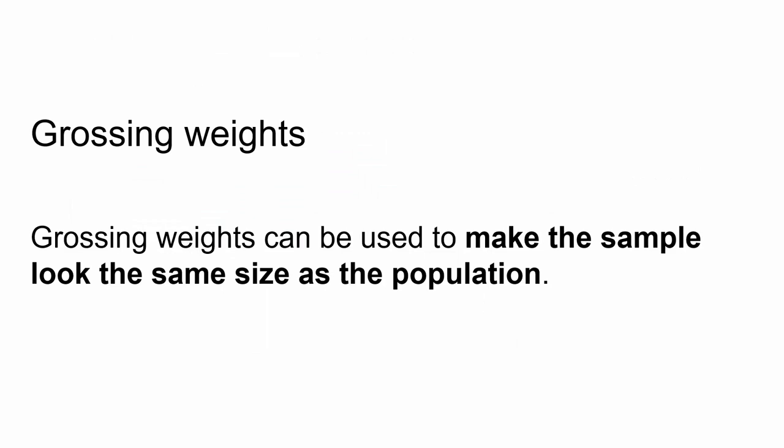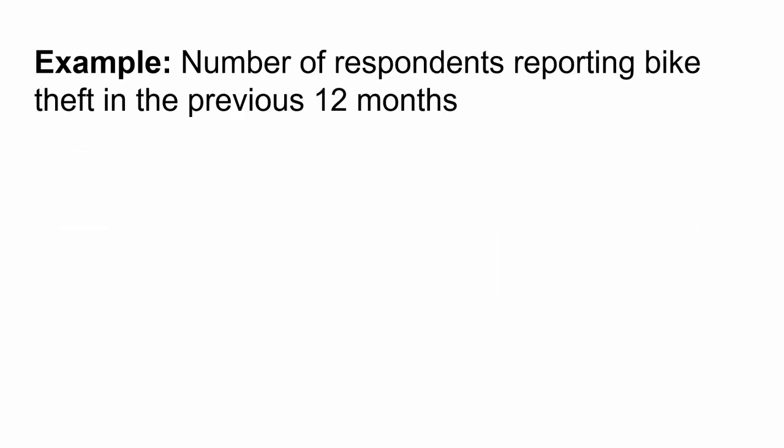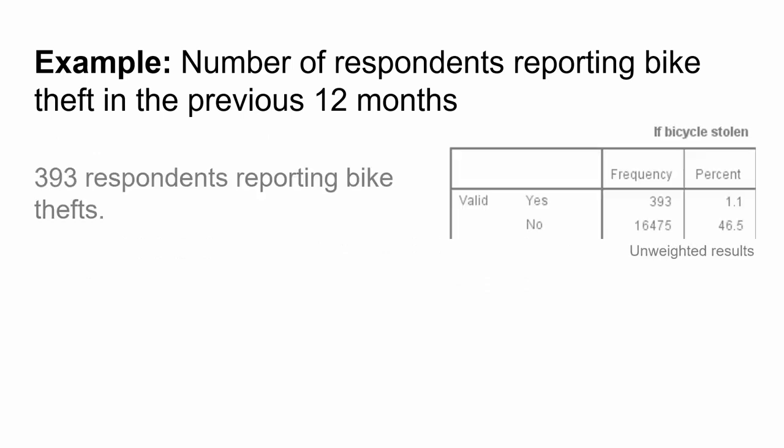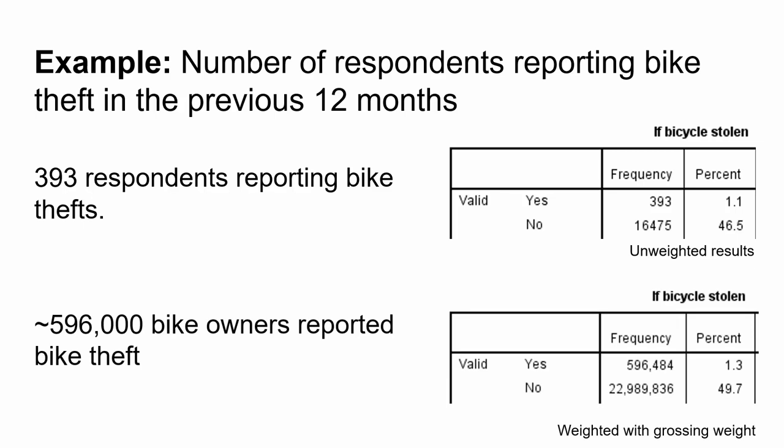Weights can also be used to make the sample look the same size as the population. Known as grossing weights, they can help us describe the prevalence of social phenomena. For example, with the Crime Survey for England and Wales, they help us describe rates of crime. This example, from the 2016-2017 data, shows the number of respondents reporting bike theft in the previous 12 months. The unweighted sample gives a frequency of 393, and after weighting, this increases to over 596,000, which is an estimate of the total number of people who had a bike stolen in the previous 12 months.